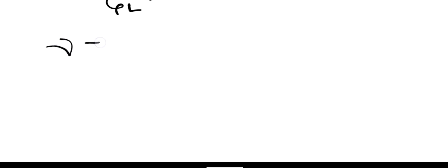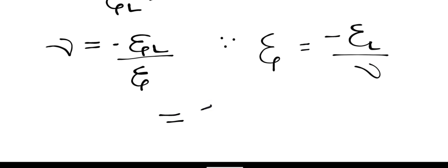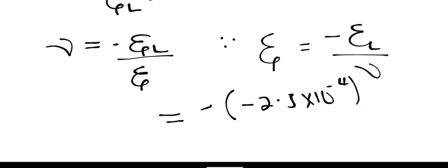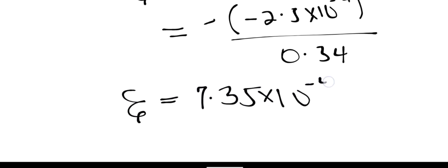Now to determine the linear strain: since Poisson's ratio v = −ε_L / ε, the linear strain is ε = −ε_L / v. Substituting: ε = −(−2.5 × 10⁻⁴) / 0.34. Therefore the linear strain is 7.35 × 10⁻⁴.